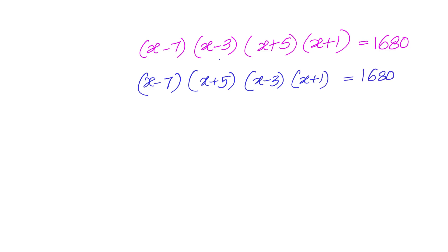Now, what is the logic behind switching here? If you multiply them, what we are going to get, let us see. This is x square minus 2x minus 35 and this is x square minus 2x minus 3.